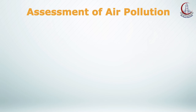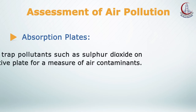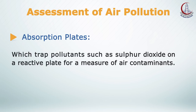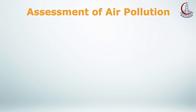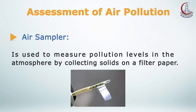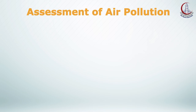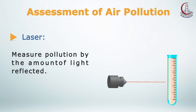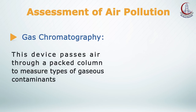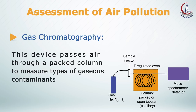For assessment of air pollution, there are many types of instruments used to measure it, such as absorption plates, which trap pollutants such as sulfur dioxide on a reactive plate for a measure of air pollutants, and gas chromatography, which passes air through a packed column to measure types of gaseous contaminants.